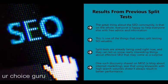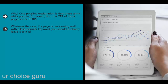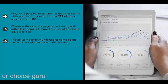Why did traffic drop? One possible explanation is that these popular terms hurt the CTR of those pages in the SERPs. Another possibility is that this had to do with Google's RankBrain algorithm - its attempt to understand meaning more than explicit keywords. Whatever the case, if a page is performing well with a less popular keyword, you should probably leave it as it is. This perfectly underscores the multivariable nature of SEO: while a recommendation might sound good on paper, it doesn't always translate in the real world, especially now that Google pays close attention to user signals such as bounce rate and CTR.